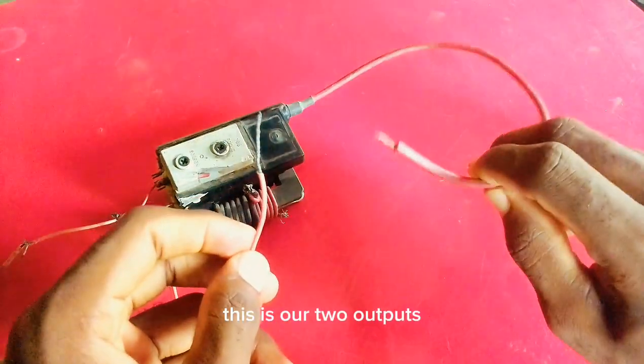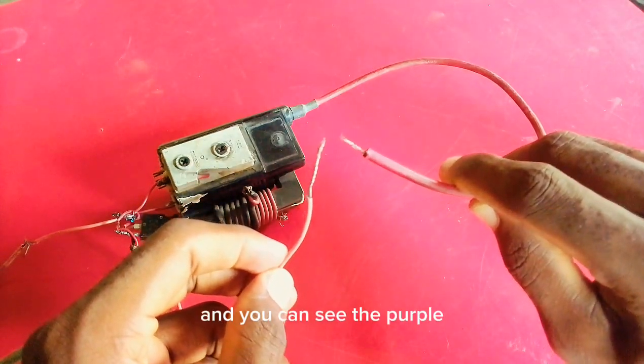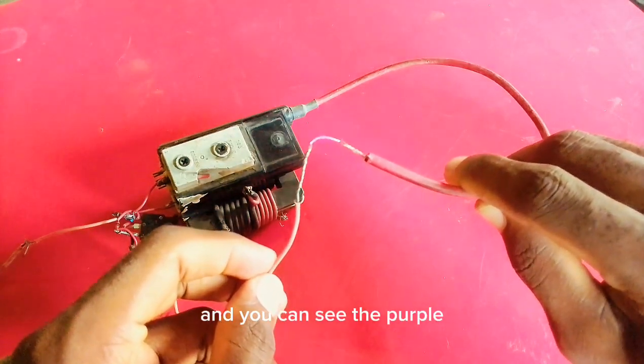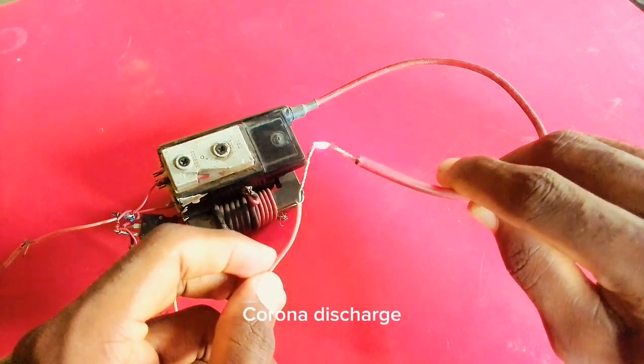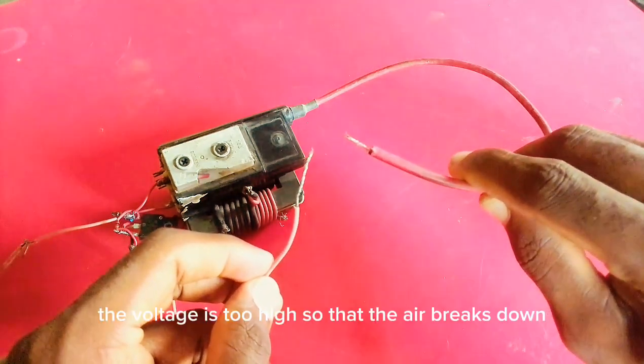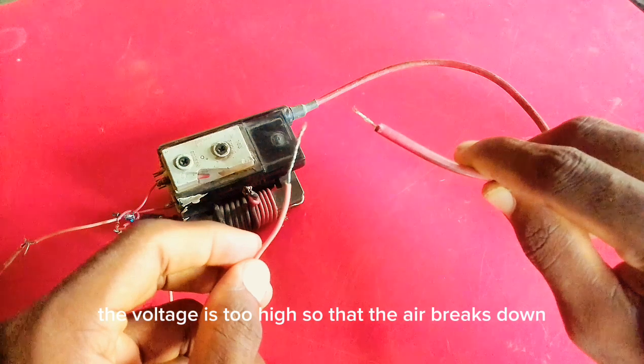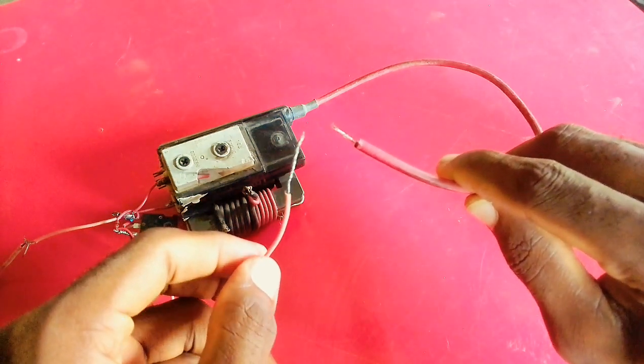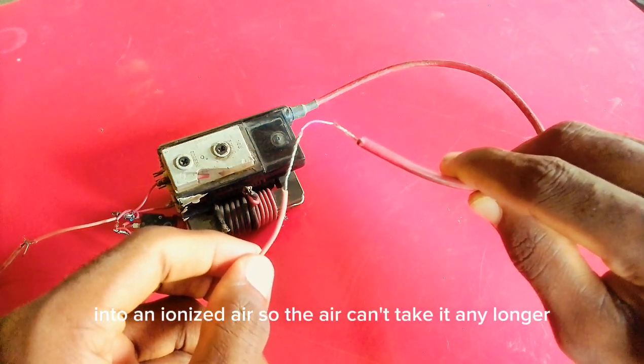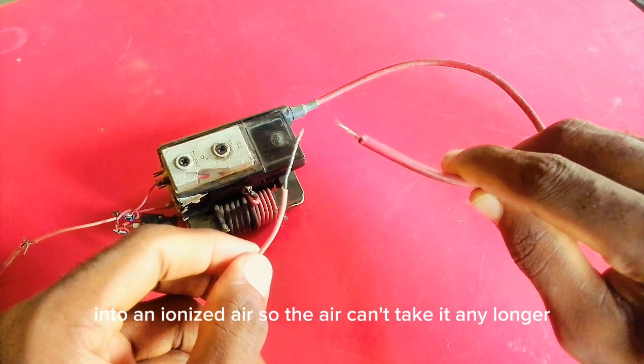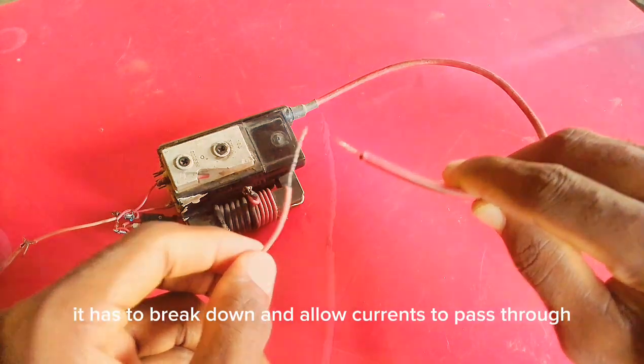This is our two outputs and you can see the purple corona discharge. The voltage is too high such that the air breaks down into an ionized air so the air can't take it any longer. It has to break down and allow current to pass through.